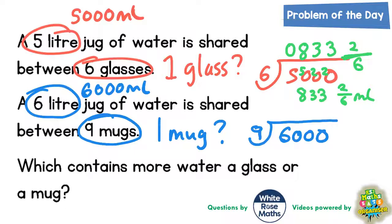Now for the mug: nines into six won't go because nine is bigger than six, so carry the six to make sixty. Nines into sixty — six nines are fifty-four, with six left over, making sixty again. This repeats: nines into sixty is six, remainder six. The final remainder is six, and because we're dividing by nine, it becomes a fraction of six-ninths. So in one mug there is six hundred and sixty-six and six-ninths of a millilitre.